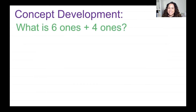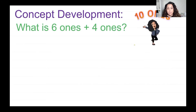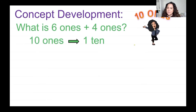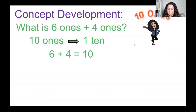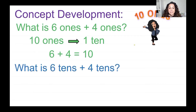What is six ones plus four ones? If you said six ones plus four ones is 10 ones, you're right — it's 10 ones. Let's show that in units: I have 10 ones, and that is the same as 1 ten. So six plus four is equal to 10. That's true.